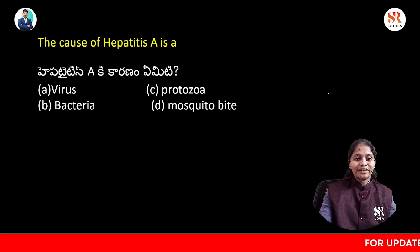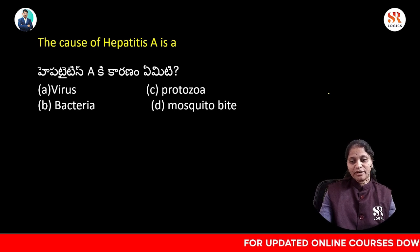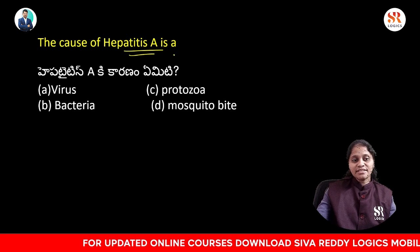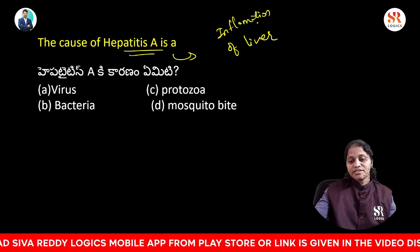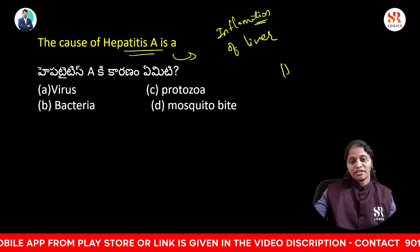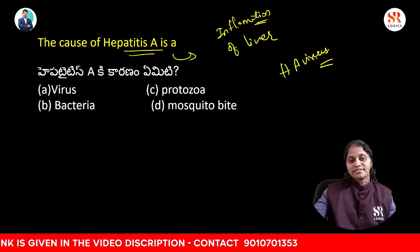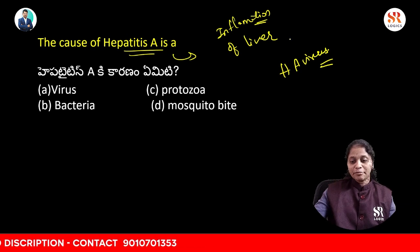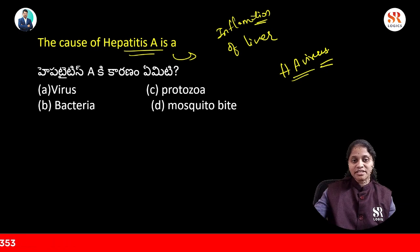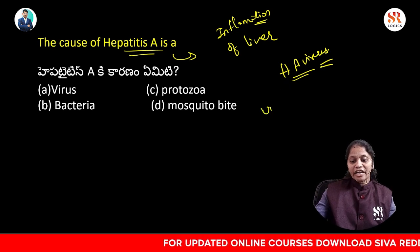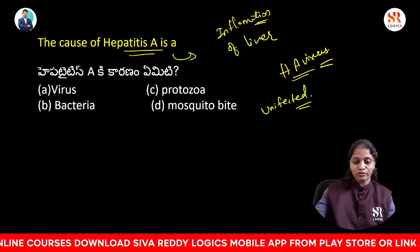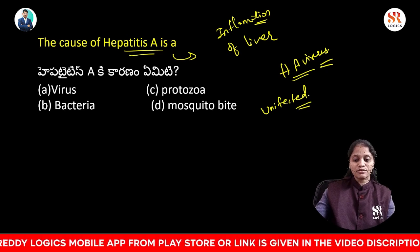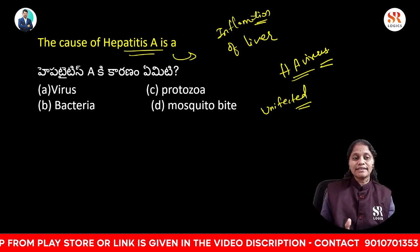The cause of hepatitis A is due to — virus, protozoa, bacteria, or mosquito bite? Hepatitis A is the inflammation of the liver, which is caused by the Hepatitis A virus. The virus is spread when uninfected or unvaccinated persons ingest food or water contaminated with the feces of an infected person. So this disease occurs.